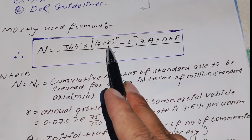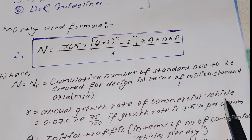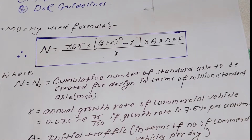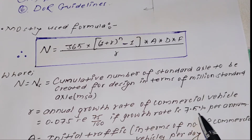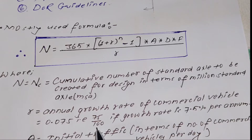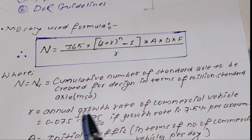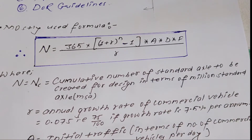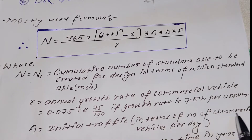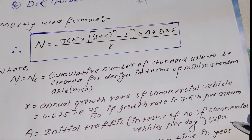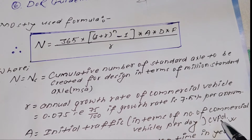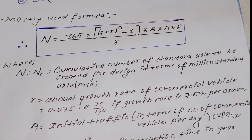r is the annual growth rate of commercial vehicles. The annual growth rate is 7.5% per annum, so divide by 100 to get r = 0.075. A is the initial traffic in terms of commercial vehicles per day (CVPD).